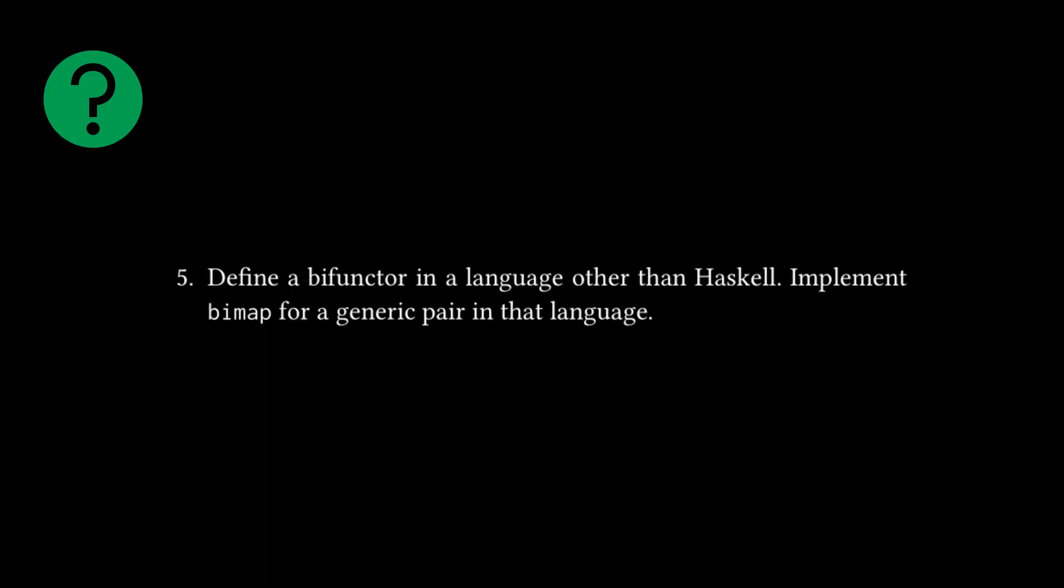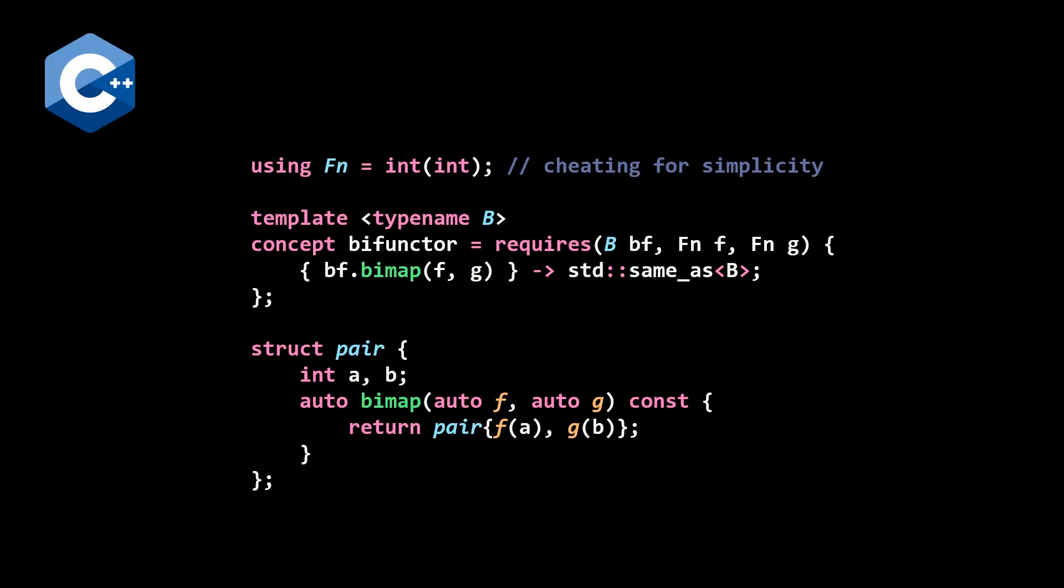This I believe brings us to the only exercise that we're going to look at or challenge that we're going to look at for this video, which is the following: define a bifunctor in a language other than Haskell, implement bimap for a generic pair in that language. And here is a very simple solution to this challenge in C++. I'm taking a shortcut in that instead of defining the type signature for a generic function of any type to any type, I've just hard coded it to go from int to int. But you could design a more complicated version that would be harder to understand.